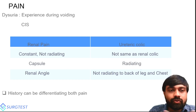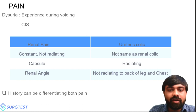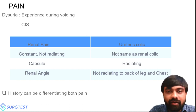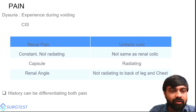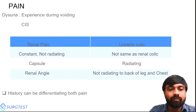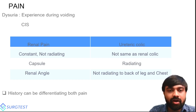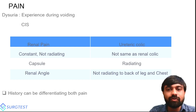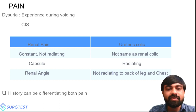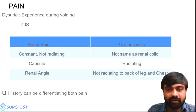Bailey mentions two different types of pain as a potential MCQ: renal pain and ureteric colic. Although both are not the same, both can be present simultaneously. The important part is that history can differentiate both pains — this line is important. Nowadays they are putting line-based MCQs asking what is true and false, so the statement 'history can differentiate both pains' is important.